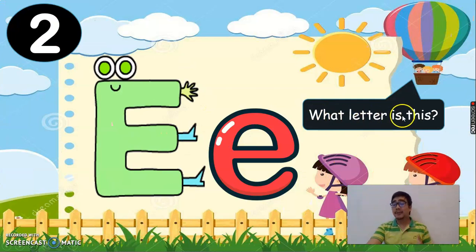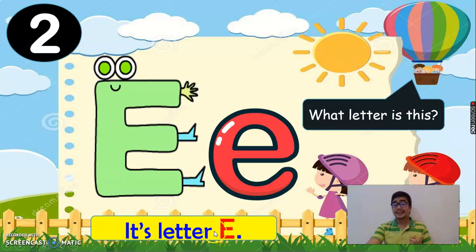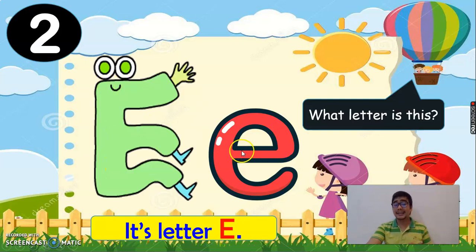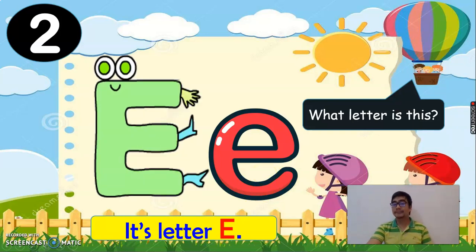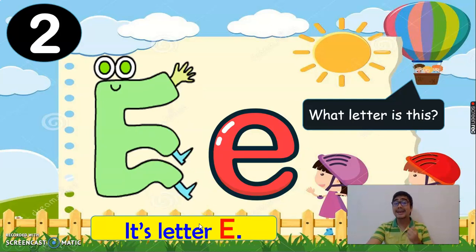Number two, letter E. Can you tell me what letter is this? It's letter E. So we have big letter E and a small letter E. And what is the beginning sound of letter E? It's E, E, E. Now, can you repeat after me? E, E, E. Very good. I'll show you two words that start with the letter E, with the beginning sound E, E, E. Very good. So let's start.